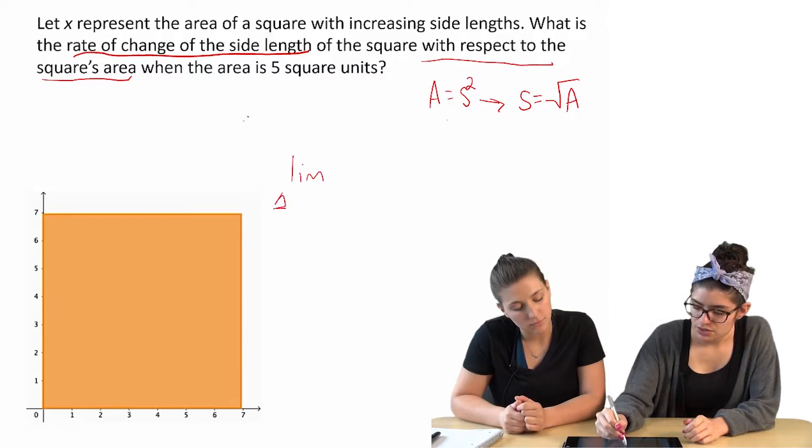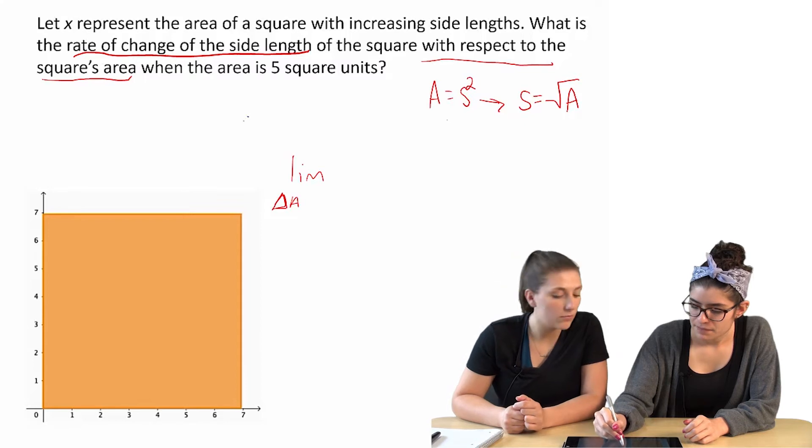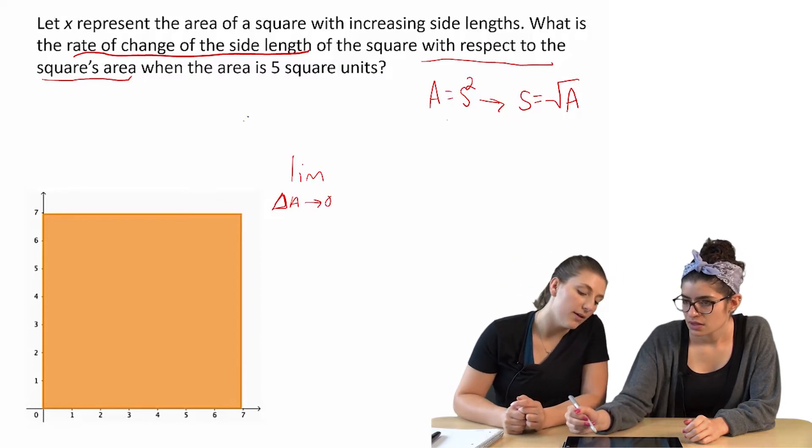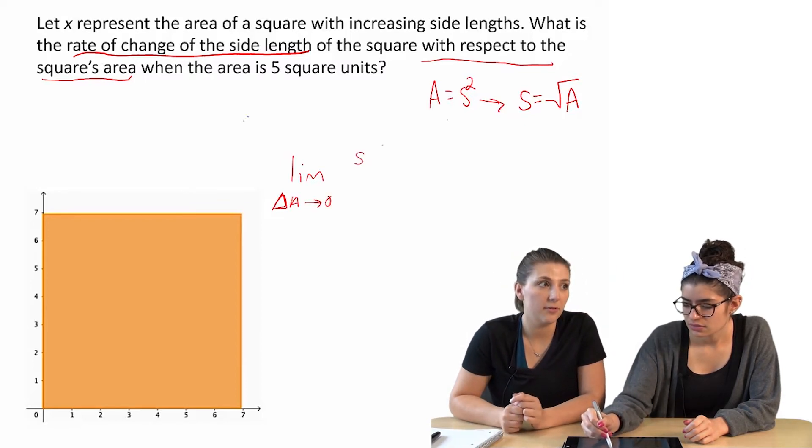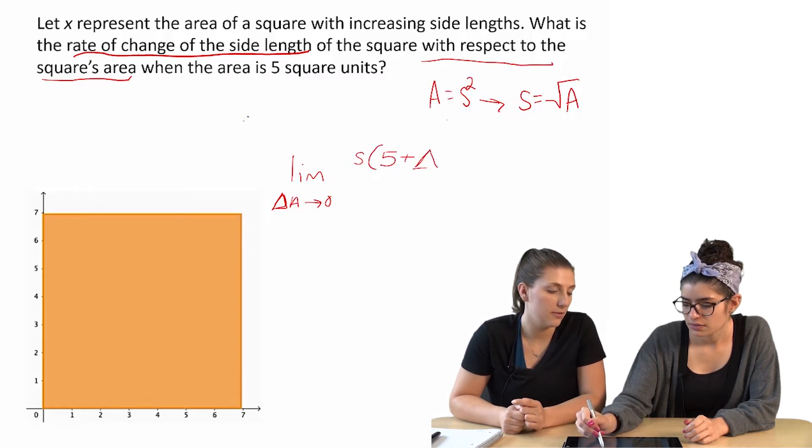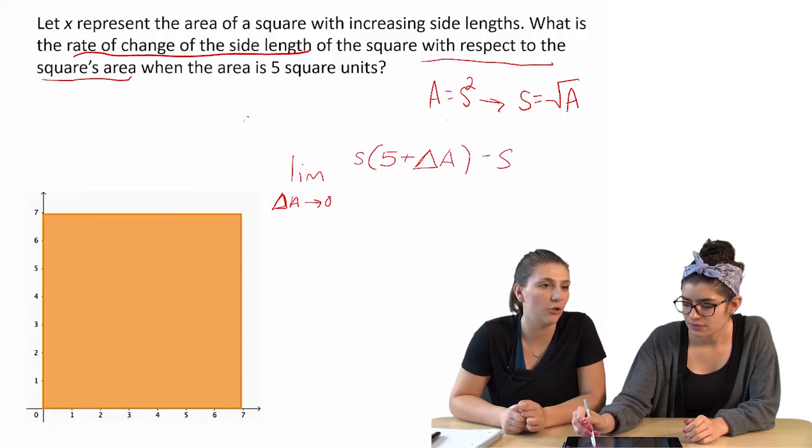The limit as delta a approaches zero, and then it's s of 5 plus delta a minus s of 5 all over delta a.